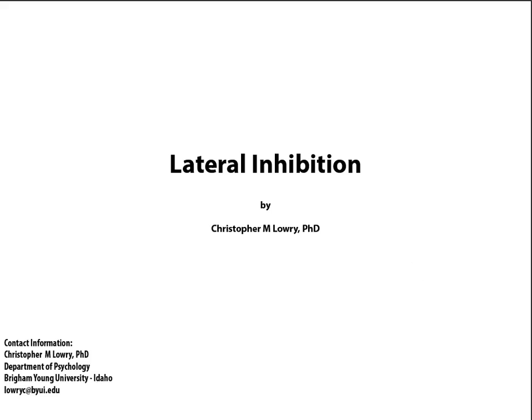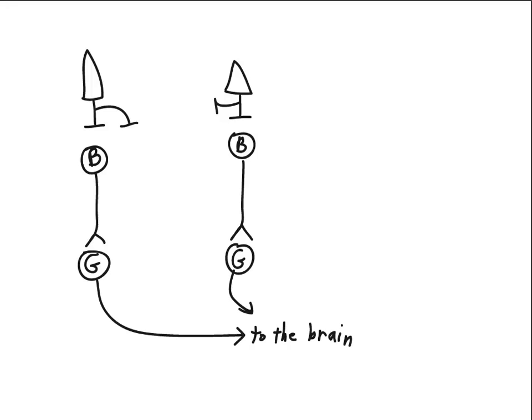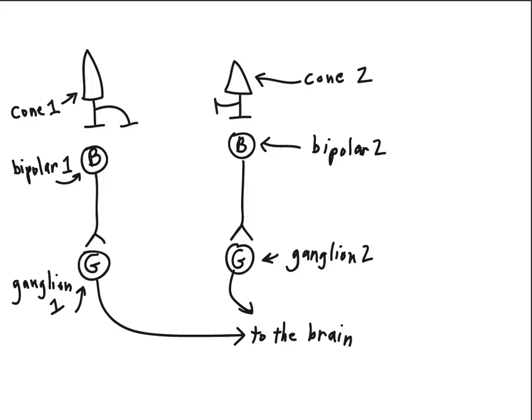In order to understand this, we'll take a look again at the cells that we find in the retina. You should be familiar already with these basic cells. Here we've illustrated cones, those are photoreceptors, and I've labeled them cone 1 and cone 2 so that we can easily distinguish them. We also have bipolar cells labeled bipolar 1 and bipolar 2, and the ganglion cells with ganglion 1 and ganglion 2, whose axons come together to form the optic nerve and send information to the brain.